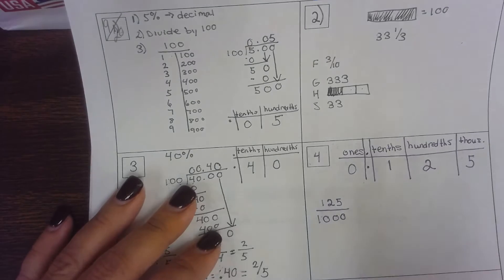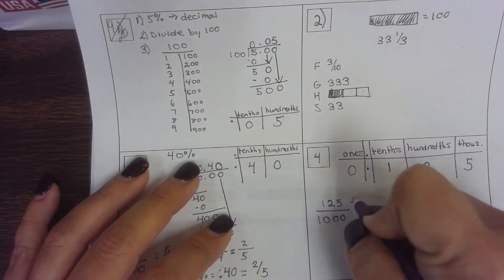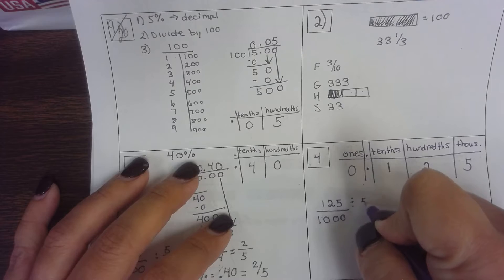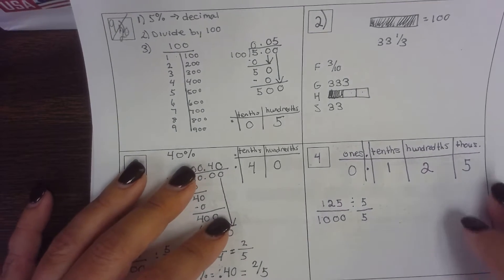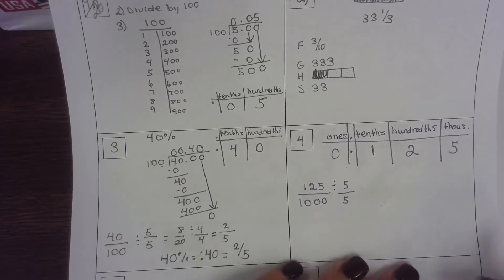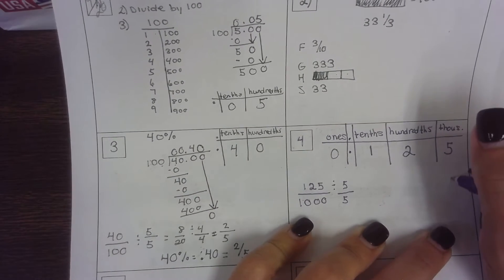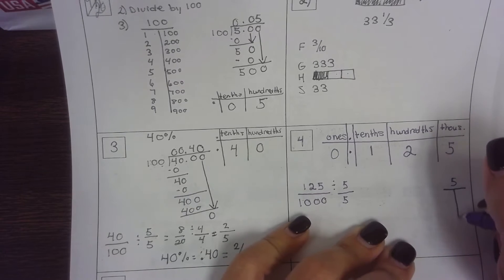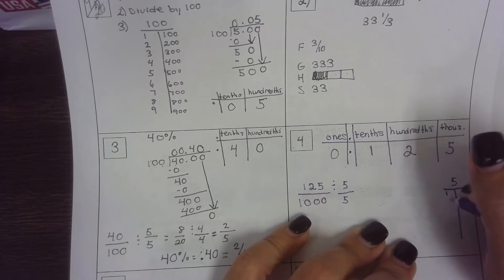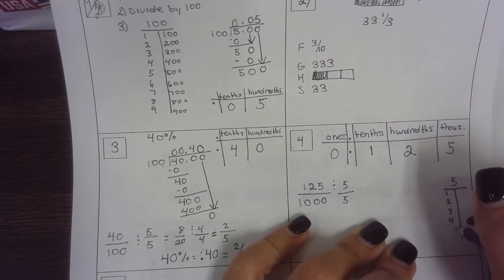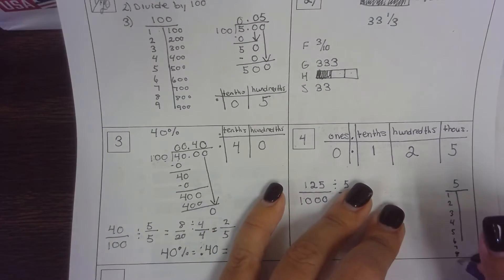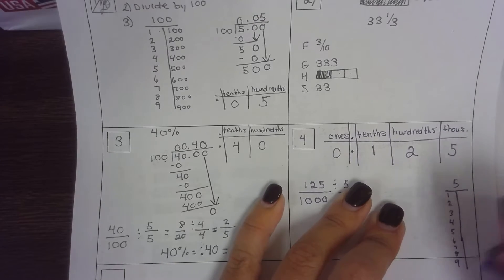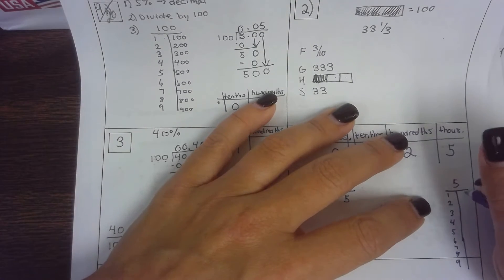This ends with a five and that ends with a zero, so that's my clue that I can divide by five to simplify. I'm going to make my five t-chart because I'm going to be dividing by five.